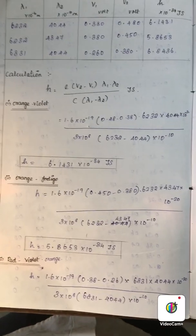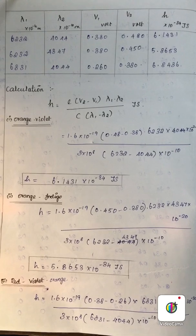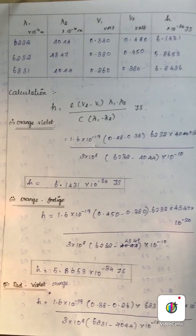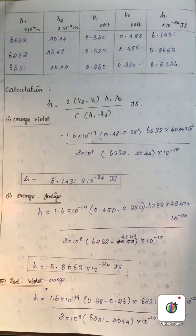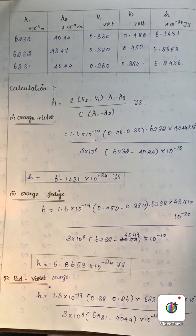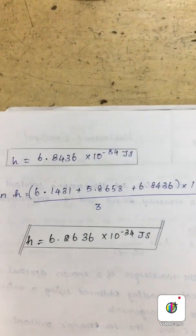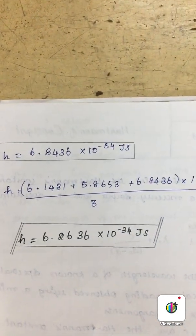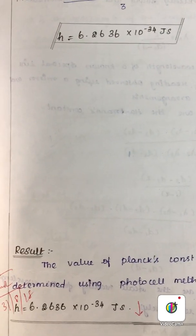The similar calculation is done for different colored filters with different wavelengths, and you can calculate Planck's constant and arrive at the results. Thank you.